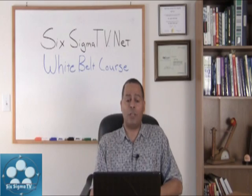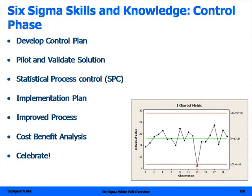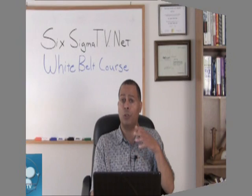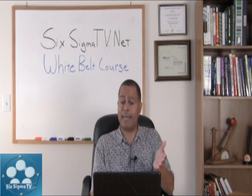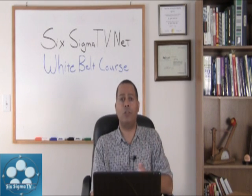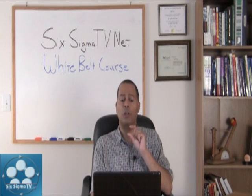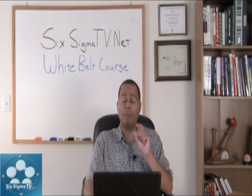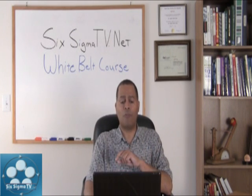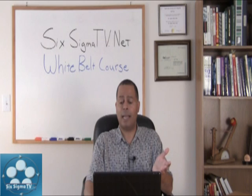So the steps that you're going to go through: you're going to develop your control plan in this phase, you're going to pilot and validate those solutions, you're going to use a tool called statistical process control to help you monitor where your new process is. You're going to do your new capability analysis from that pilot, your new standard deviations, your new defects per million opportunities — all those things that will let you know where the new process is. You're going to have an implementation plan for that improved process, do your cost-benefit analysis, and again, celebrate the success.